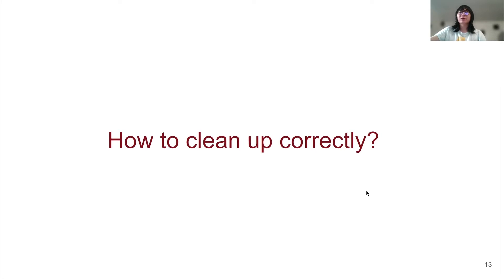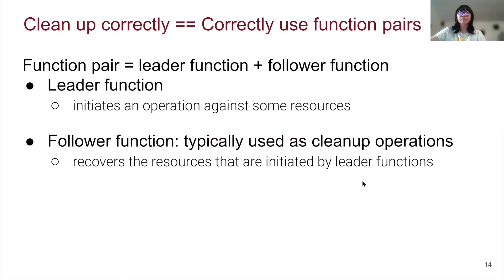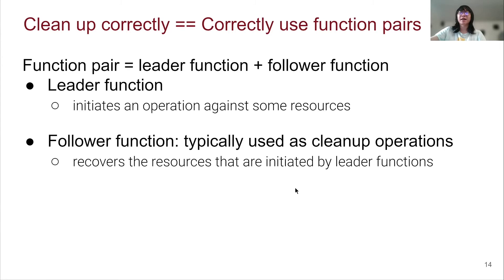Before talking about detecting disordered error handling bugs, the first question is: how can we clean up correctly? In this project, we argue that cleaning up correctly means correctly using function pairs. A function pair consists of two functions: the leader function and the follower function. The leader function initiates some operation against some resources, and the follower function is used to recover or clean up the resources that were initiated by the leader function. So most follower functions are typically used as cleanup operations, and correctly using function pairs means we can clean up correctly.